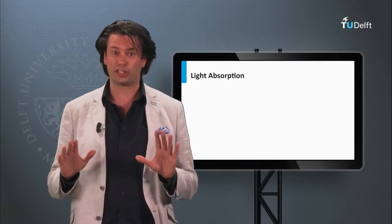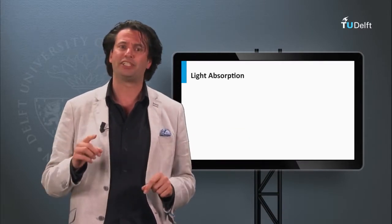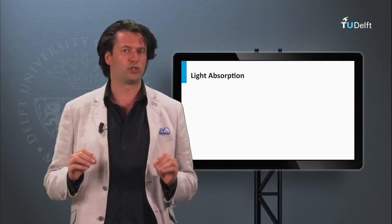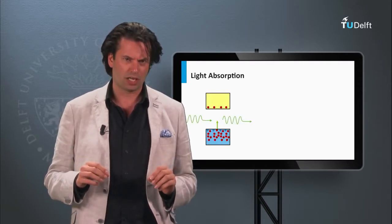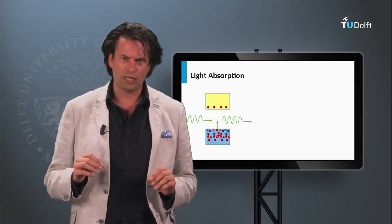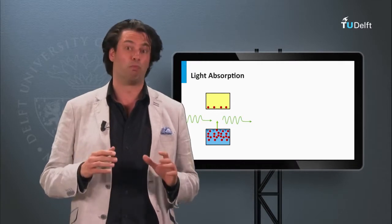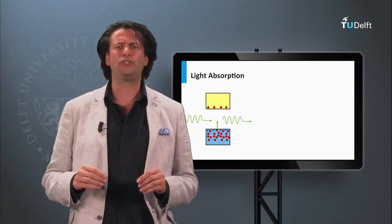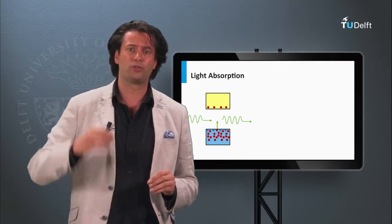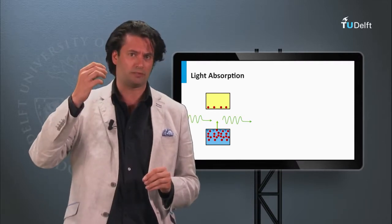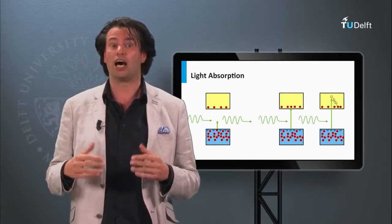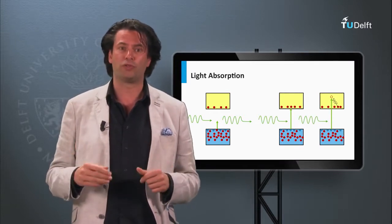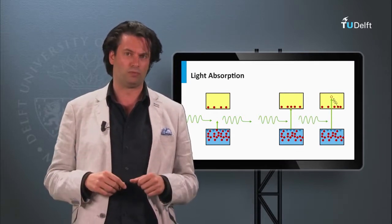Let's consider a single junction solar cell in which the absorber layer is a material with a certain band gap energy. We know that when the energy of a photon is smaller than the band gap, it is lacking the energy to excite an electron to the conduction band. When the energy is larger than the band gap, absorption of the photon results in a mobile electron and hole.